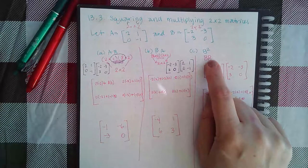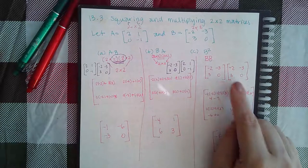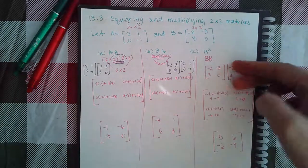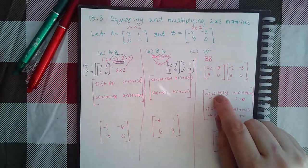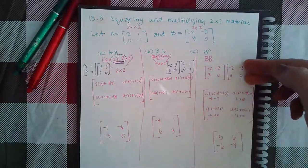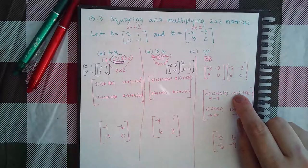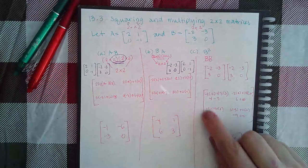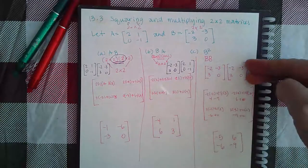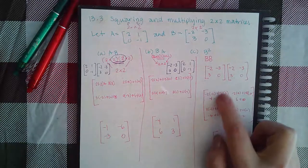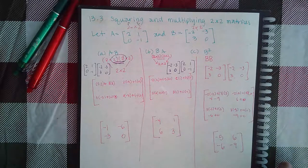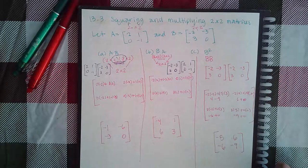To square a matrix means to multiply that matrix by itself, so you write the matrix twice and follow the same process. First row times first column, first row times second column, second row times first column, second row times second column — take your products and combine the like terms, and you end up with all the elements of the squared matrix.